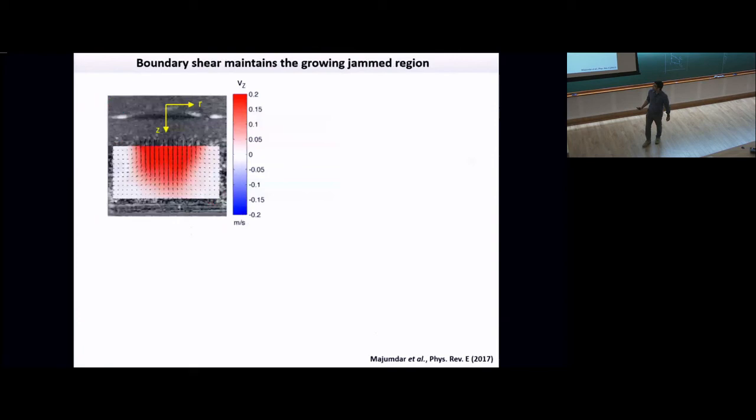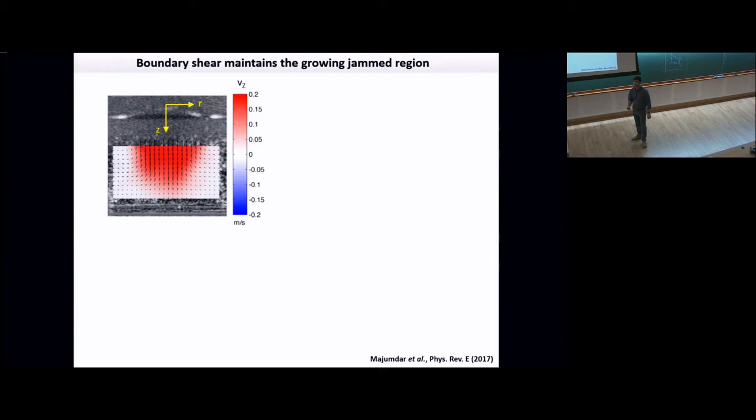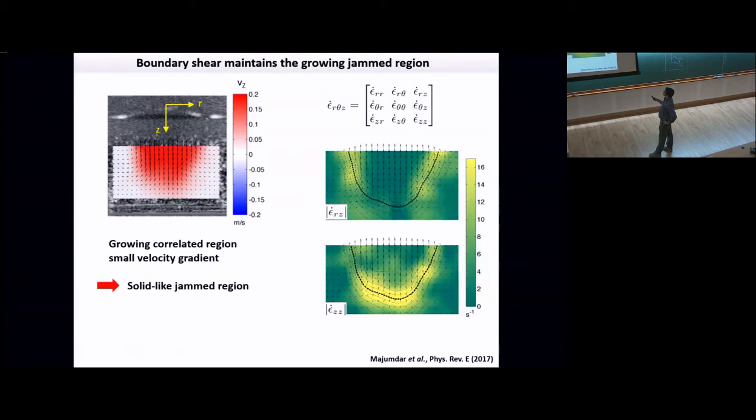We measured the flow field inside the suspension. You cannot see inside optically because it is an opaque suspension, so we used X-ray and ultrasound imaging. You can get the velocity profile out and measure the strain rate tensor. What you see is, as you pull onto this, you have a correlated region - correlated region means it is translating like a rigid body. If you estimate the strain rate tensor, you can see that around this region you have a strong shear. This bright region corresponds to strong shear. There are localized shear around this solid-like correlated region - that means the boundary shear is maintaining this solid-like region. It looks like shear jamming is a likely mechanism.